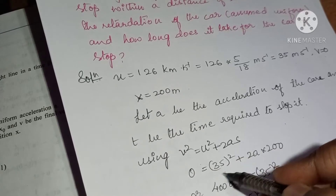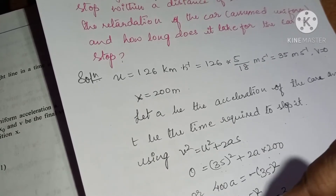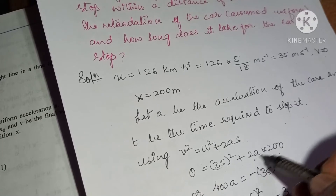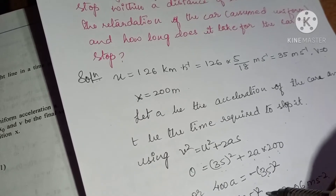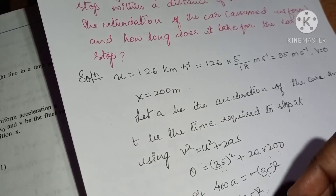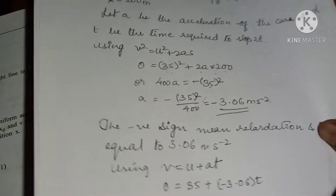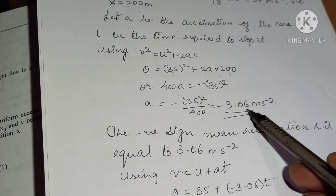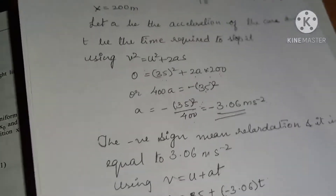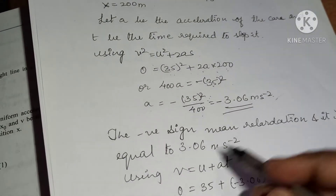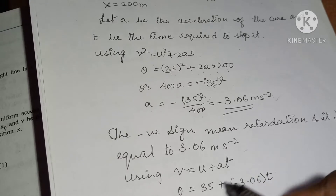Substituting: 0 = 35² + 2a × 200, so 400a = −35², giving a = −35²/400 = −3.06 meters per second squared. The negative sign indicates retardation (negative acceleration), so the retardation is 3.06 m/s².